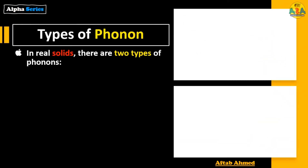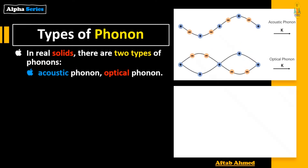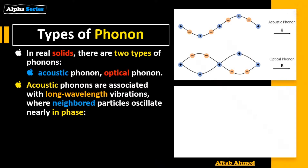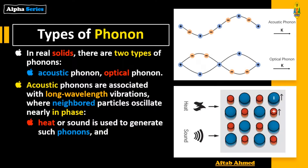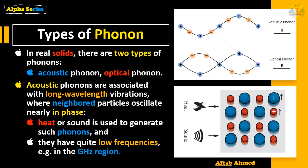In real solids there are two types of phonons: number one, acoustic phonon; number two, optical phonon. Acoustic phonons are associated with long wavelength vibrations where neighboring particles oscillate nearly in phase. Two things are to be remembered: they have long wavelength vibrations, and their neighbor particles oscillate in phase. Heat or sound is used to generate such phonons. They have relatively low frequencies because their wavelengths are high, and they fall in the gigahertz region.